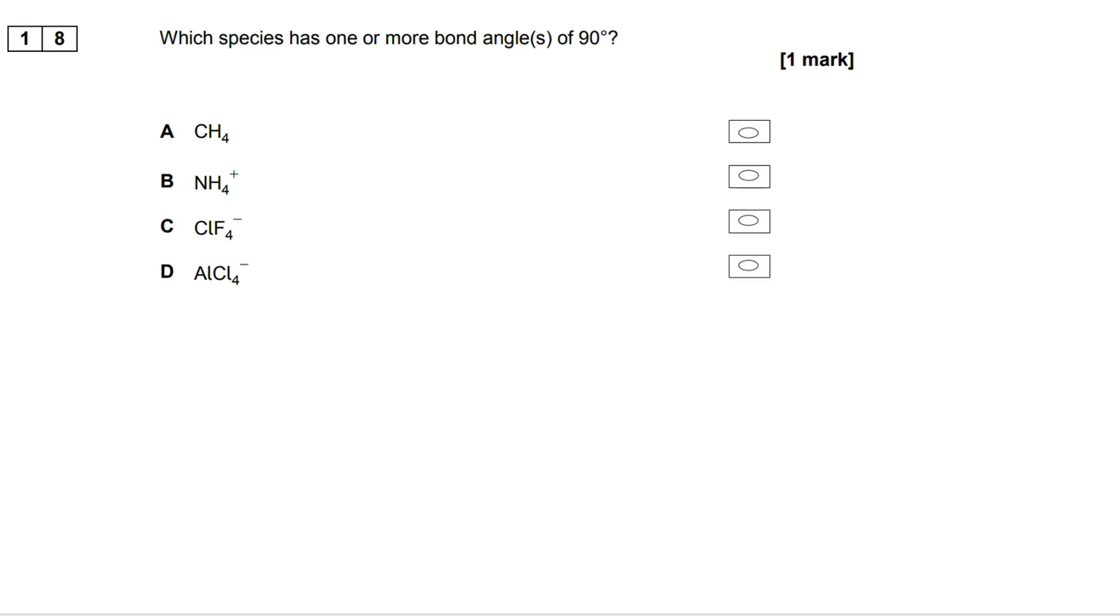This is an AS multiple choice question. We're asked which species has one or more bond angles of 90 degrees. Now hopefully you're able to go through and recognize some of these and identify what the answer can't be very quickly.